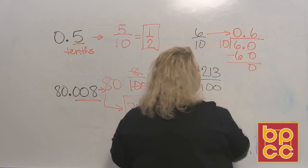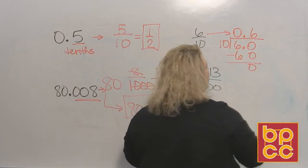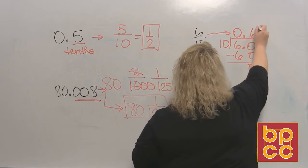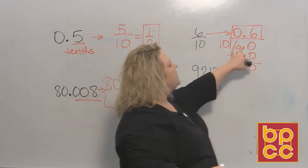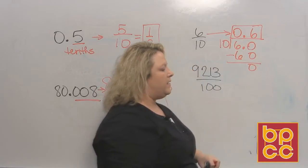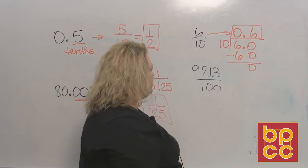So 6 tenths, the fraction, becomes 0.6, the decimal. And that is still 6 tenths because the 6 is the first digit behind the decimal. Alright, now we want to do this one.